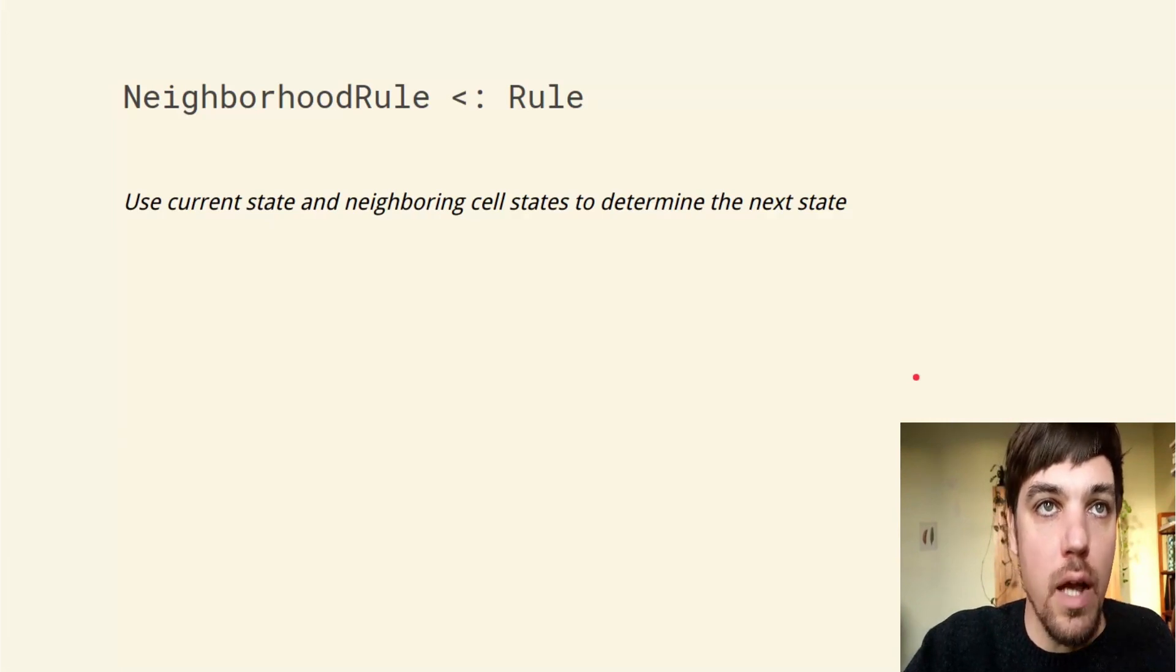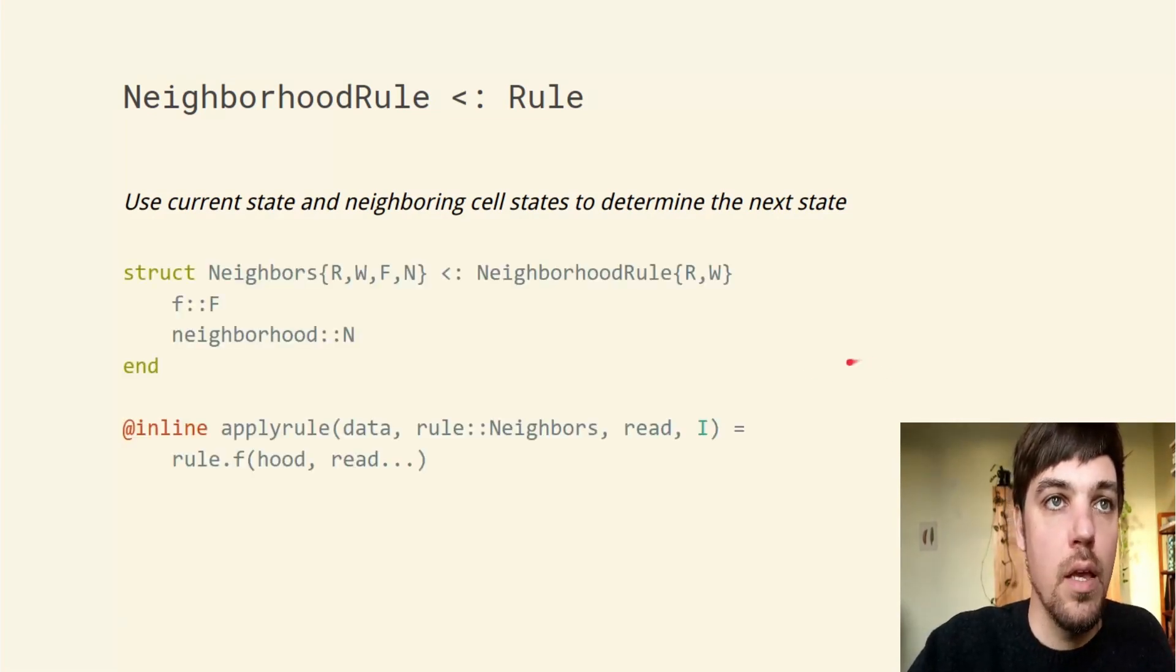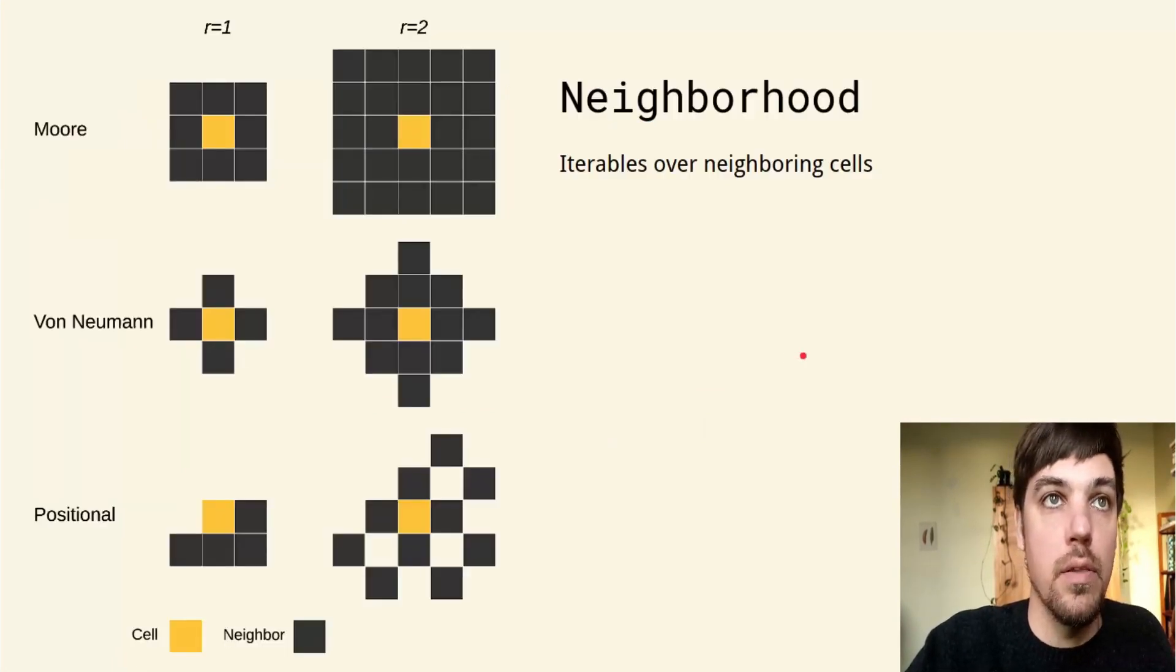The next rule is a neighborhood rule. These use the current state and the neighboring cell state to determine the next cell state. You may be familiar with them from cellular automata. We can define them in a similar way, but neighborhood rules always need a neighborhood field.